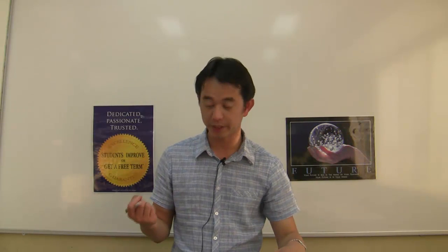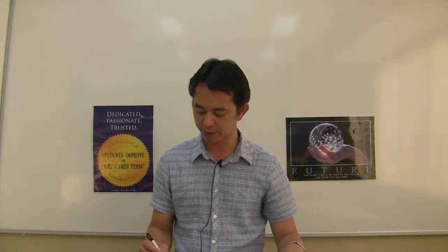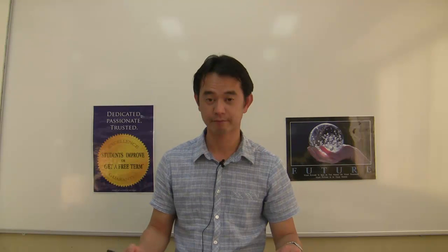So the locus of P is nothing more than a circle of radius 1, centered at (1, 0). And of course, notice that the point (0, 0) has to be excluded here, way at the beginning. And that's it. That's your answer. Good luck to your studies, guys.